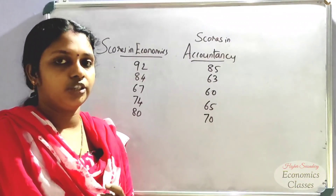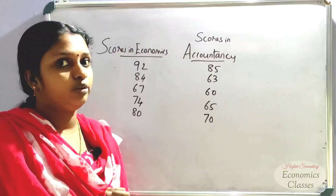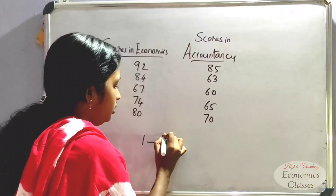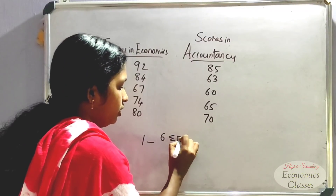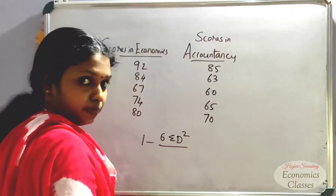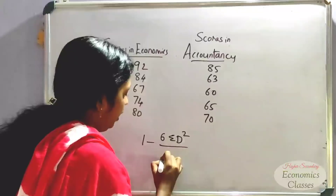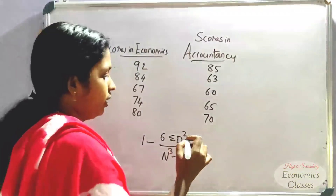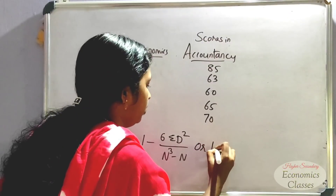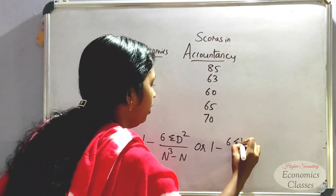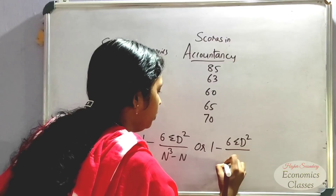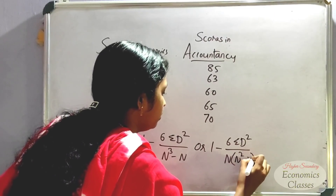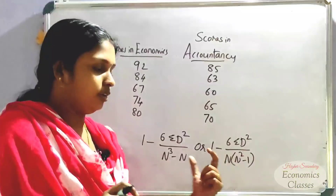The correlation equation is: r = 1 minus 6 sigma d-squared divided by n into (n-squared minus 1). That is Spearman's rank correlation formula.